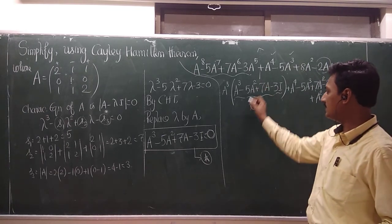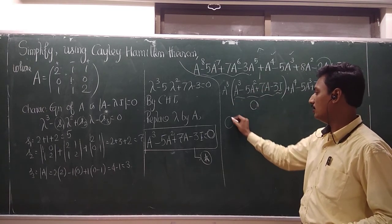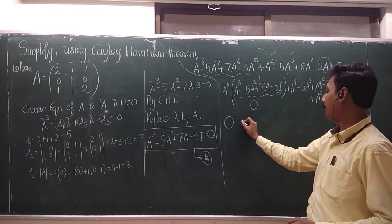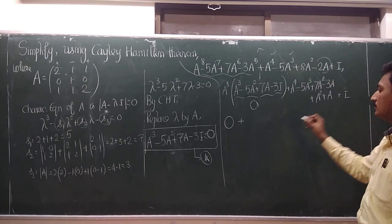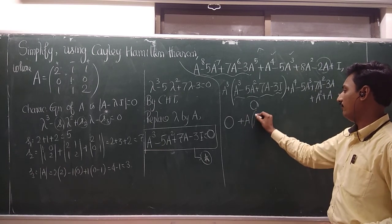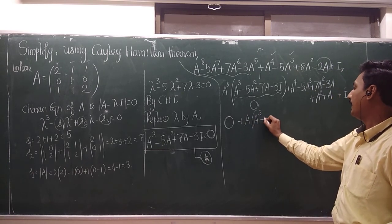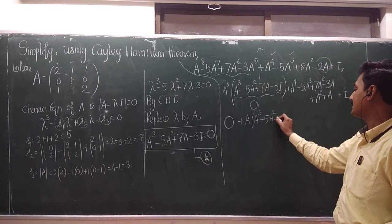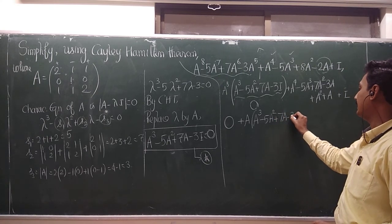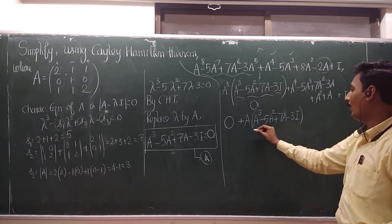Now, this is already 0. This is already 0. So the first term is 0 plus, now I can pick 1, 2, 3, 4 terms. And A squared outside, again it is A power 3 minus 5A square plus 7A minus 3I.